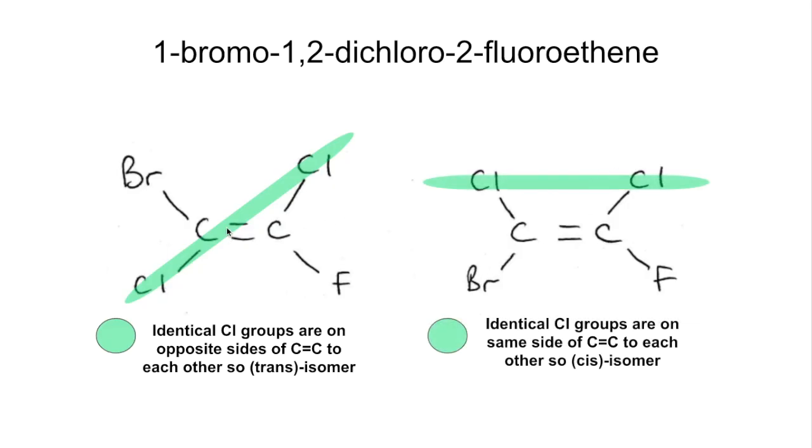So E/Z now. Which atom takes priority on the left-hand carbon of the double bond? Well, bromine has an atomic number of 35 versus chlorine 17, so priority is here. The chlorine trumps the fluorine because 17 versus 9.